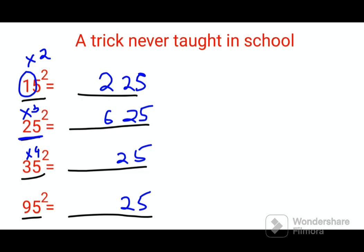So 3 into 4 gets you 12. So 1225 is the answer for 35 square. For 95 square, it will be 9 into 10 that gets you 90, so 9025 is the answer. This is the first part, but now imagine if you had something larger.